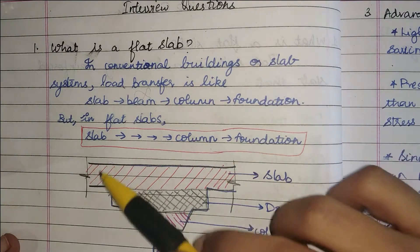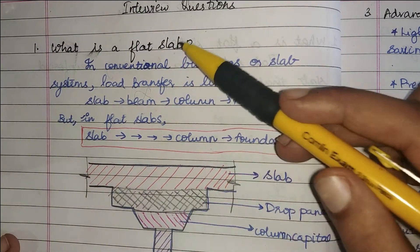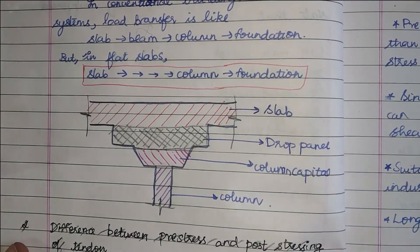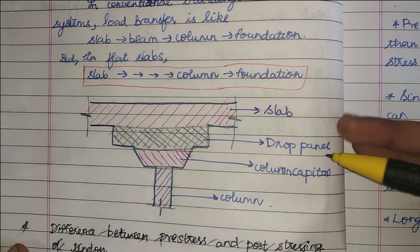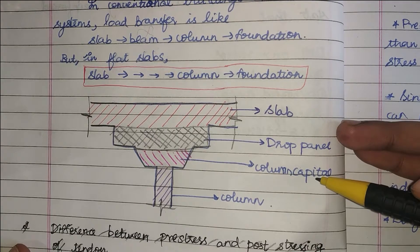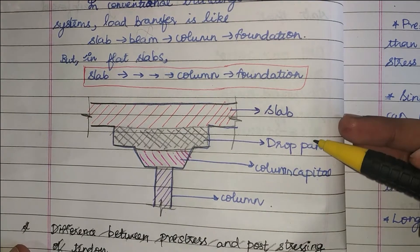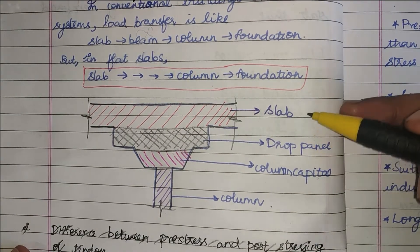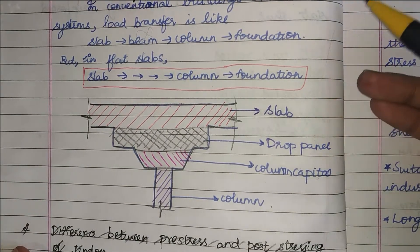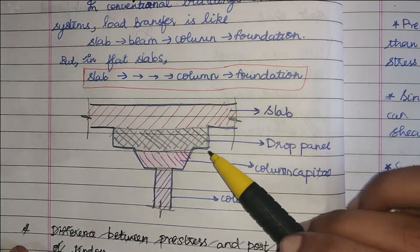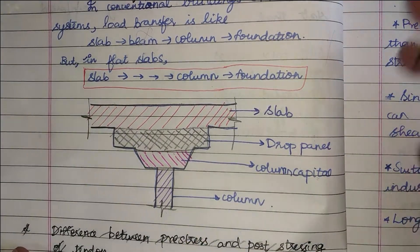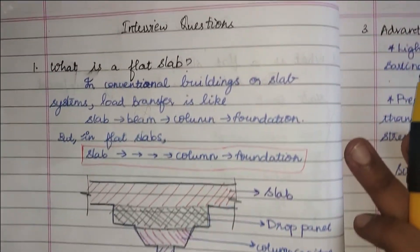That type of slab is called a flat slab. In a flat slab, instead of beams, we have two elements called the drop panel and the column capital. These do not run throughout the length of the slab — they are provided only where the columns are located.